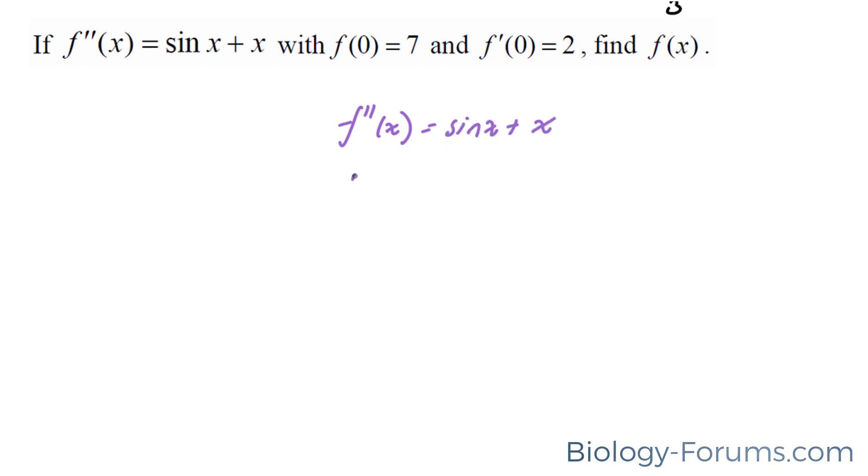And f prime of this is equal to negative cosine x, and that becomes x to the power of 2 over 2 plus c. Now interestingly, they tell us that f prime at 0 is equal to 2. So let's find out what c is moving forward. 2 is equal to negative cosine at 0 plus, this goes to 0, plus c. Now what's cosine at 0? If you recall, cosine at 0 is equal to 1. So you have 2 is equal to negative 1 plus c, and therefore c is equal to 3.